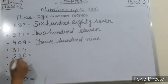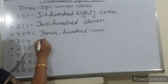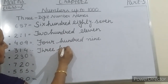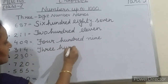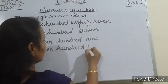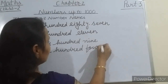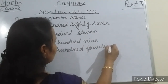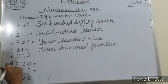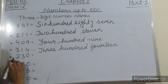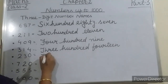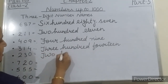314 — how will you write 314? What is written? 314 — four hundred... three hundred fourteen. Here, 230 — what is written here? 230. Two hundred thirty — 230.